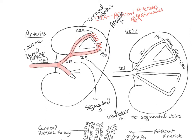The afferent arterioles have a little bulge where there's a group of capillaries called the glomerulus. This is unique because usually when an artery branches off into capillaries it becomes a venule, but here the afferent arteriole branches into glomerular capillaries and then converges again to form the efferent arteriole. It's a specialized capillary bed called the glomerulus, located in the renal corpuscle, which is part of the nephron — the functional unit of the kidneys.